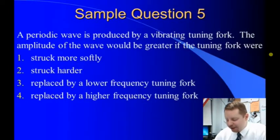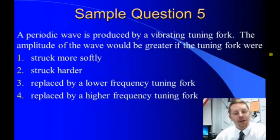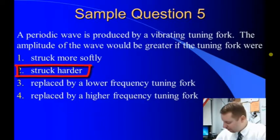A periodic wave is produced by a vibrating tuning fork. The amplitude of the wave would be greater if the tuning fork were struck more softly, struck harder, replaced by a lower frequency tuning fork, or replaced by a higher frequency tuning fork. It's interesting here. In this problem, they talk about lower and higher frequencies. Note that when you hear a sound wave, higher frequency corresponds to a higher pitch. Lower frequency corresponds to a lower pitch. That's not going to help us, though. If we want the amplitude to be greater, we need to put more energy in it. We get more energy, more loudness, by striking it harder. So the correct answer must be 2.